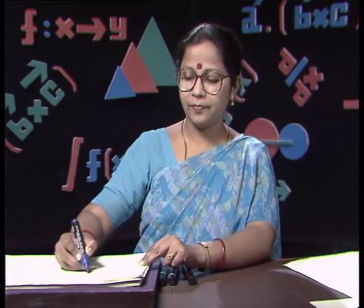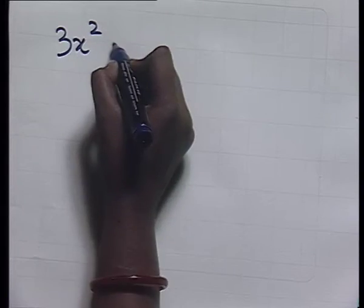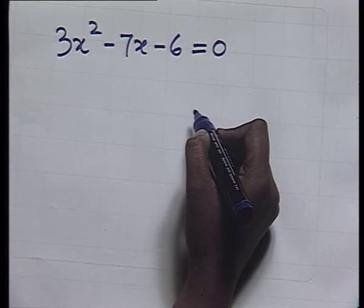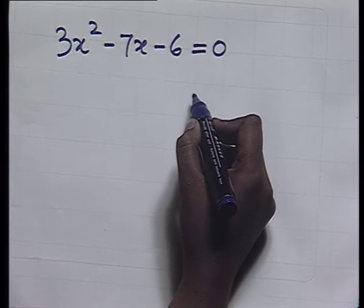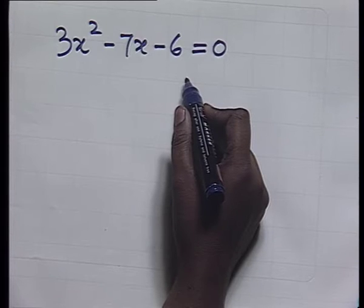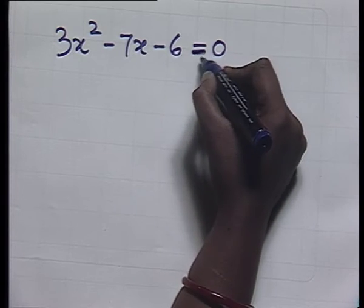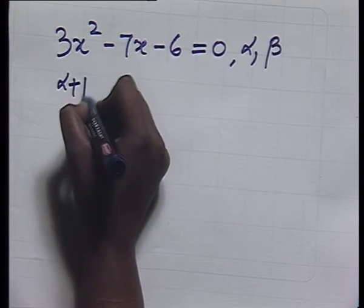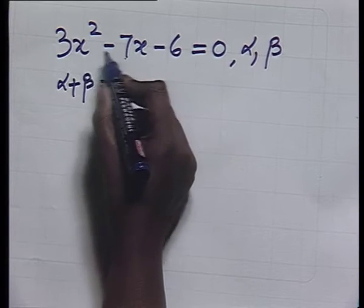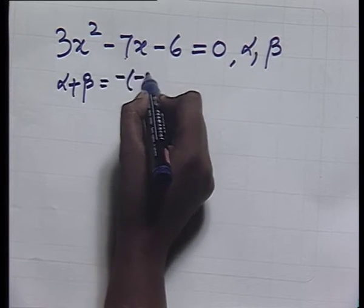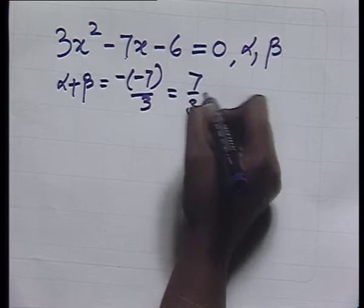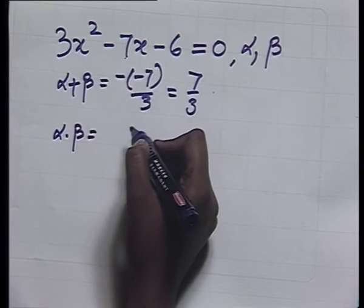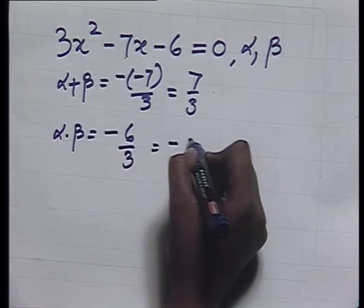Now suppose we are given the equation 3x² - 7x - 6 = 0 and we have to construct another equation whose roots are reciprocals of the roots of this equation. Let the roots of this equation be α and β. The sum of roots is α + β = -(-7)/3 = 7/3, and the product of roots is α·β = -6/3 = -2.